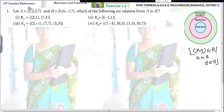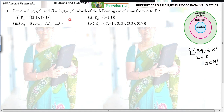2 and 7 are elements of A. 1, minus 1, 7, and 3 are elements of B. All these pairs are elements of A cross B. R3 is an element of A cross B also, so it is a subset of A cross B — so it is a relation.